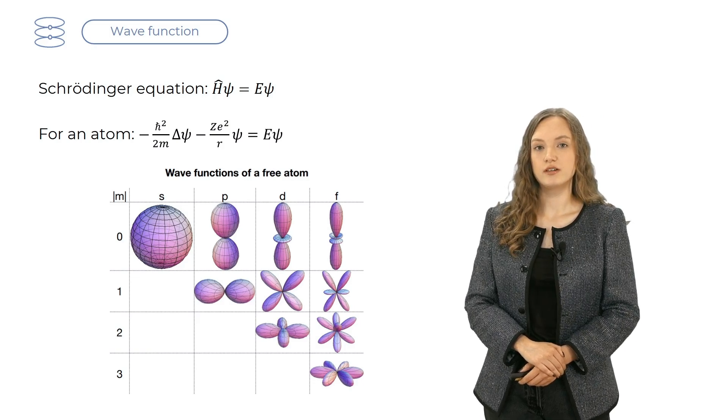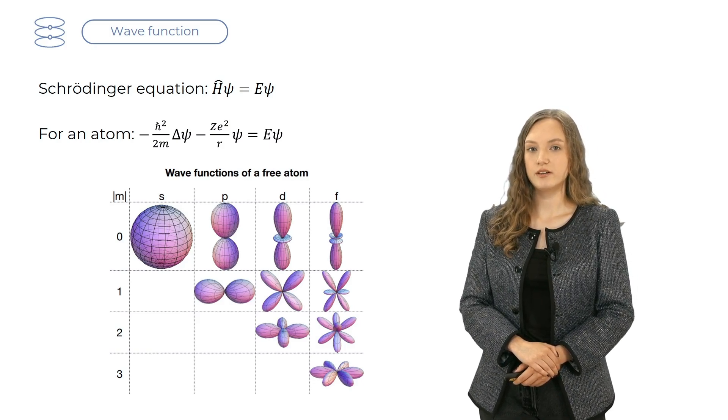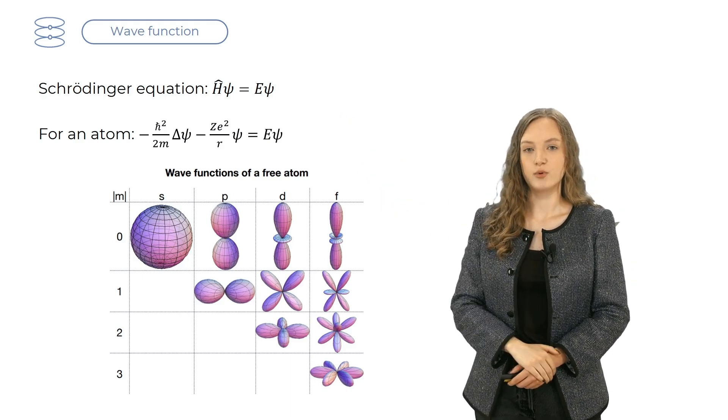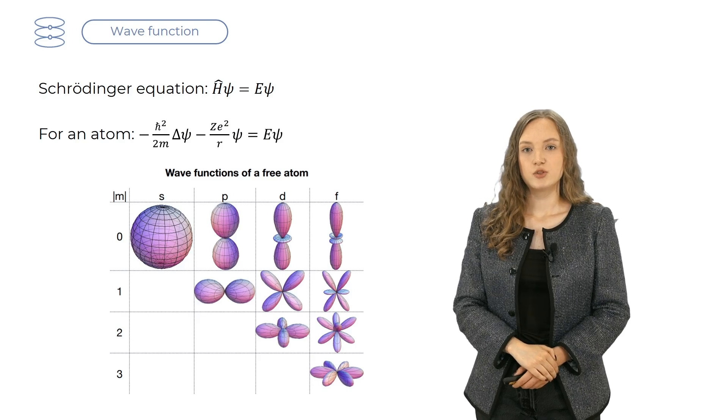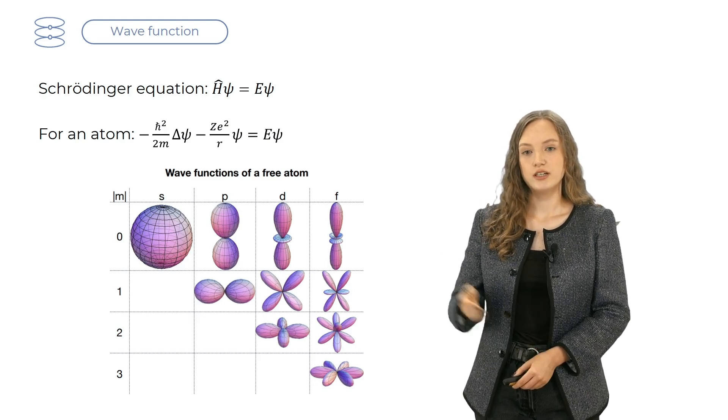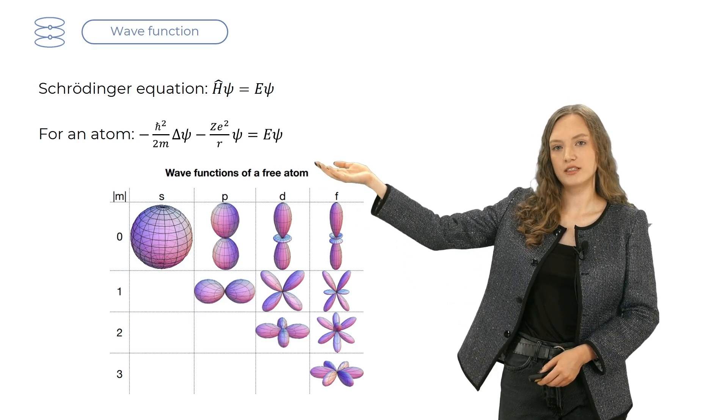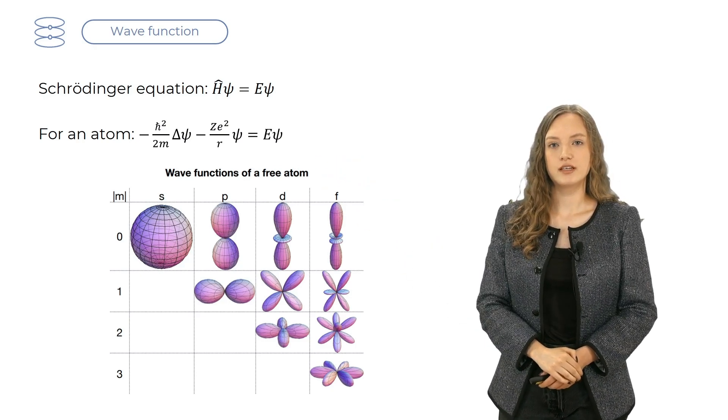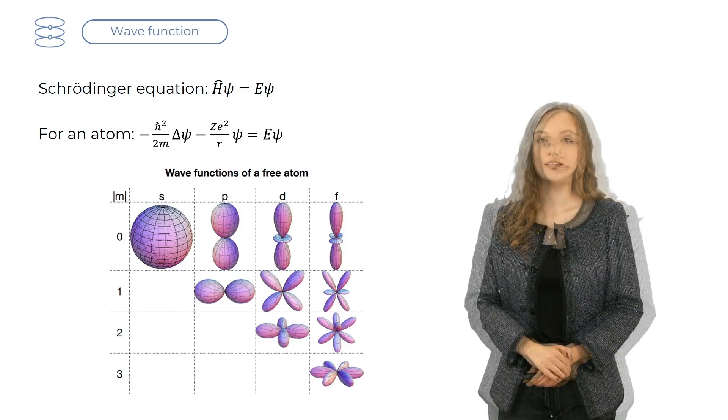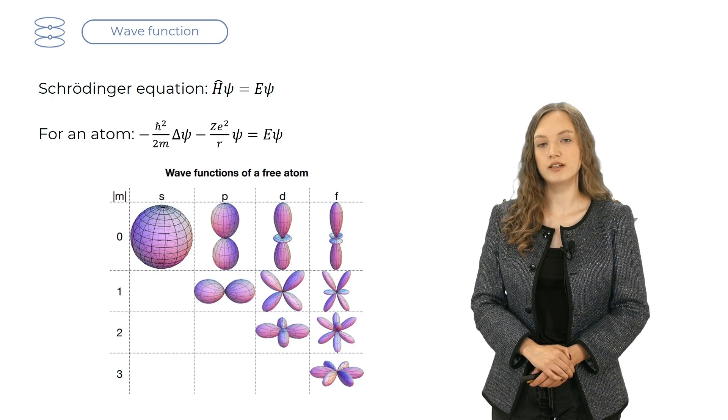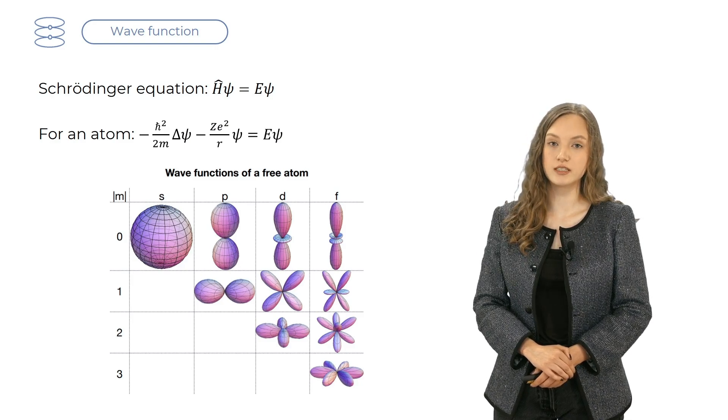The Schrödinger equation reads that the result of a total energy operator H, called Hamiltonian, acting on a wave function ψ, has to be equal to total energy E times ψ. For a free atom, the Hamiltonian consists of two terms. The first one is the kinetic energy of an electron, and the second one is the energy of electric interaction between the electron and the nucleus of the atom.